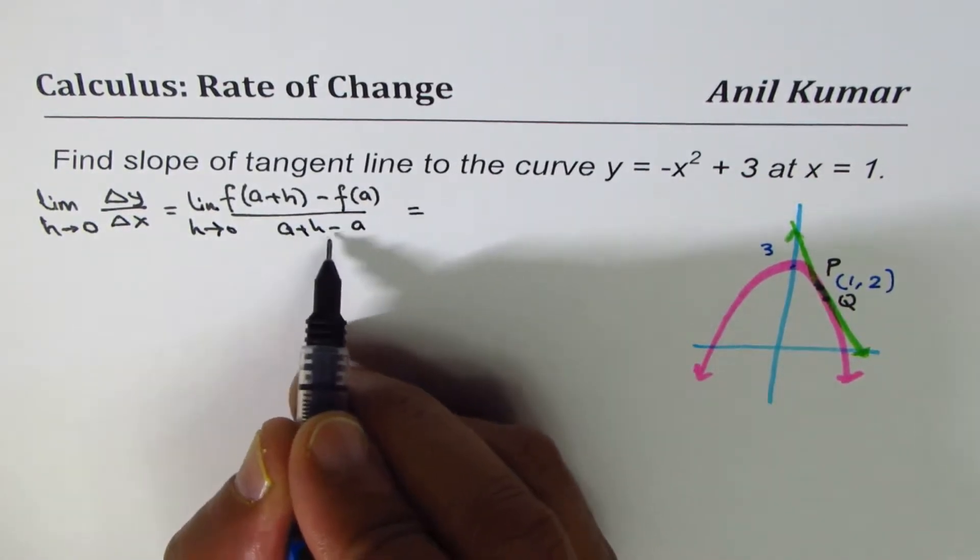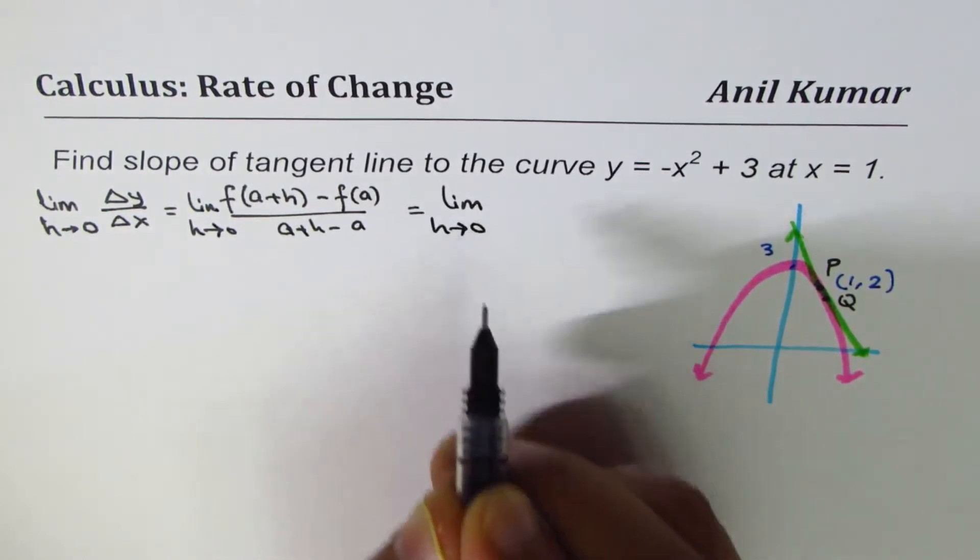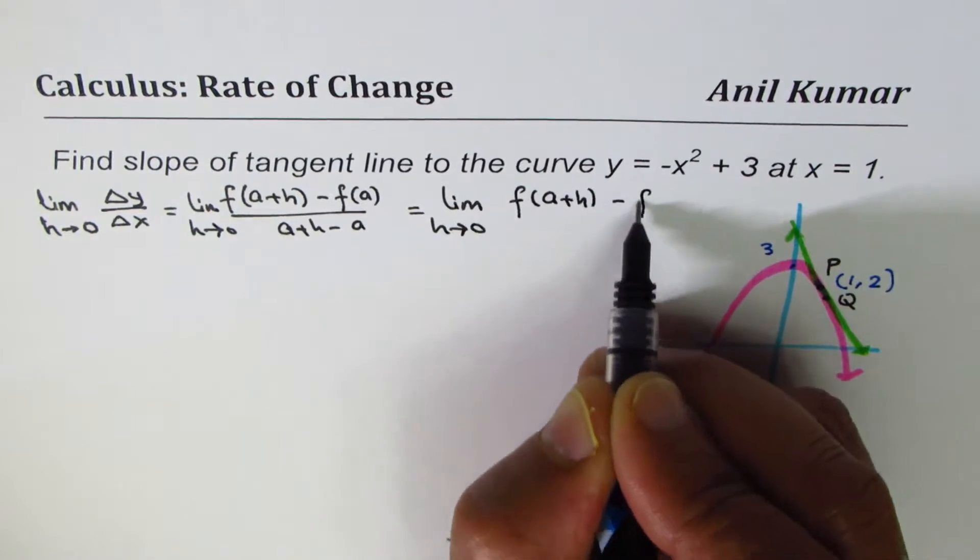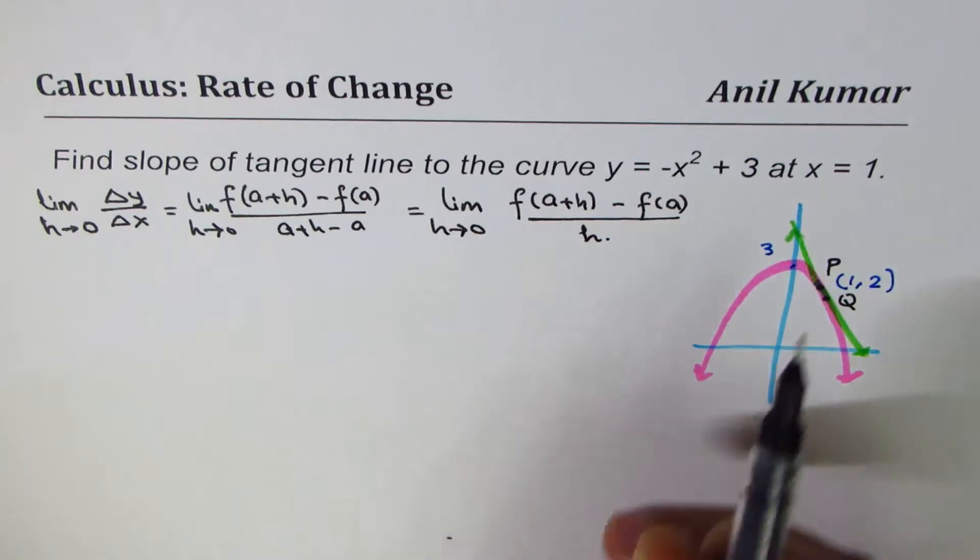Clearly, a + h - a is h, so we could write this as lim(h→0) [f(a+h) - f(a)] / h.